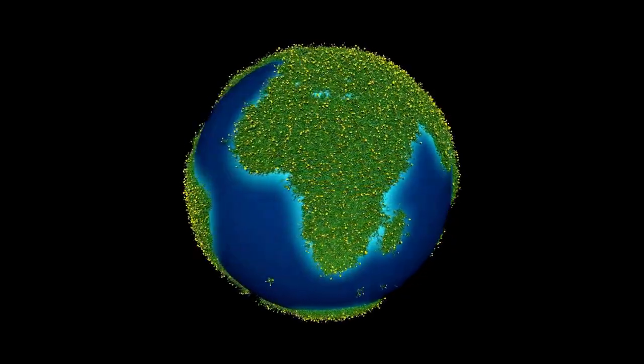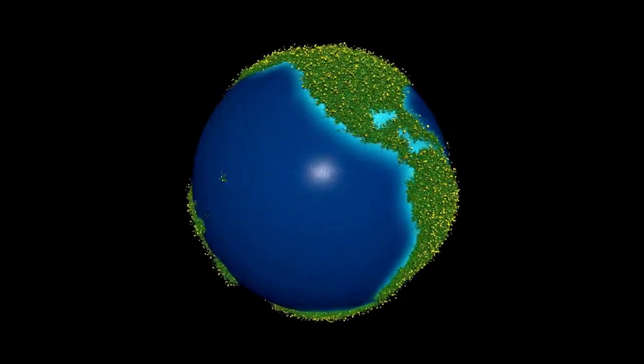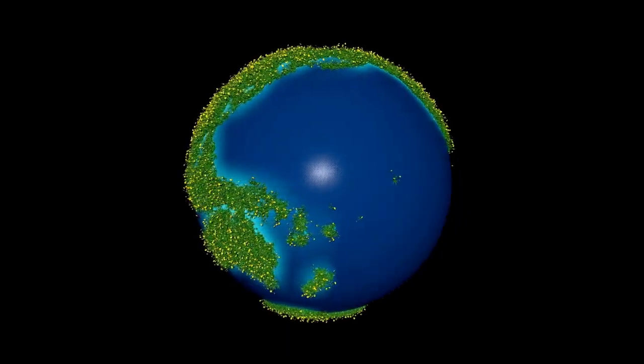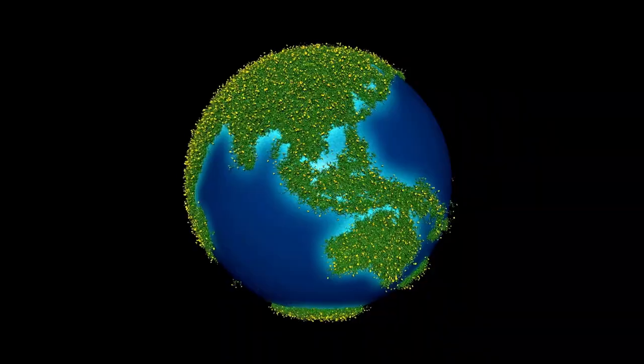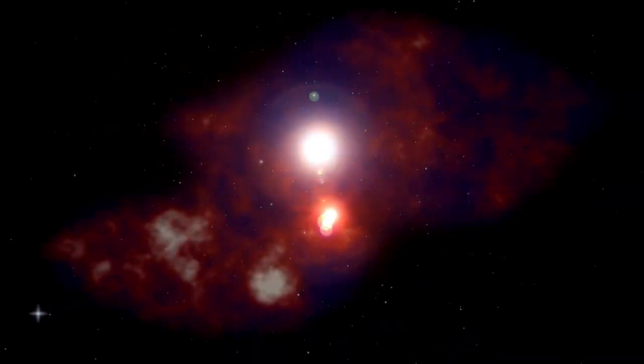But unlike Earth, this exoplanet occupies a category scientists refer to as a sub-Neptune. It is larger than Earth, but smaller than Neptune, a classification that challenges our existing frameworks for understanding planetary environments. Unlike the familiar rocky planets of our solar system, such as Mercury, Venus, Earth, and Mars,